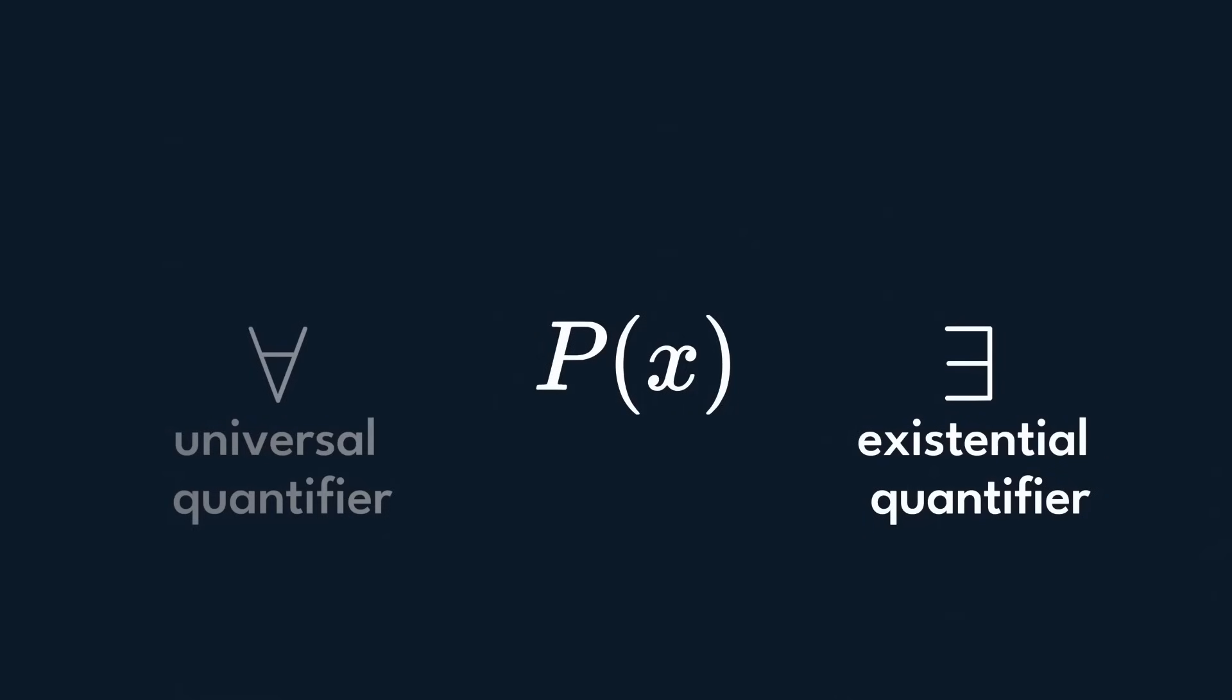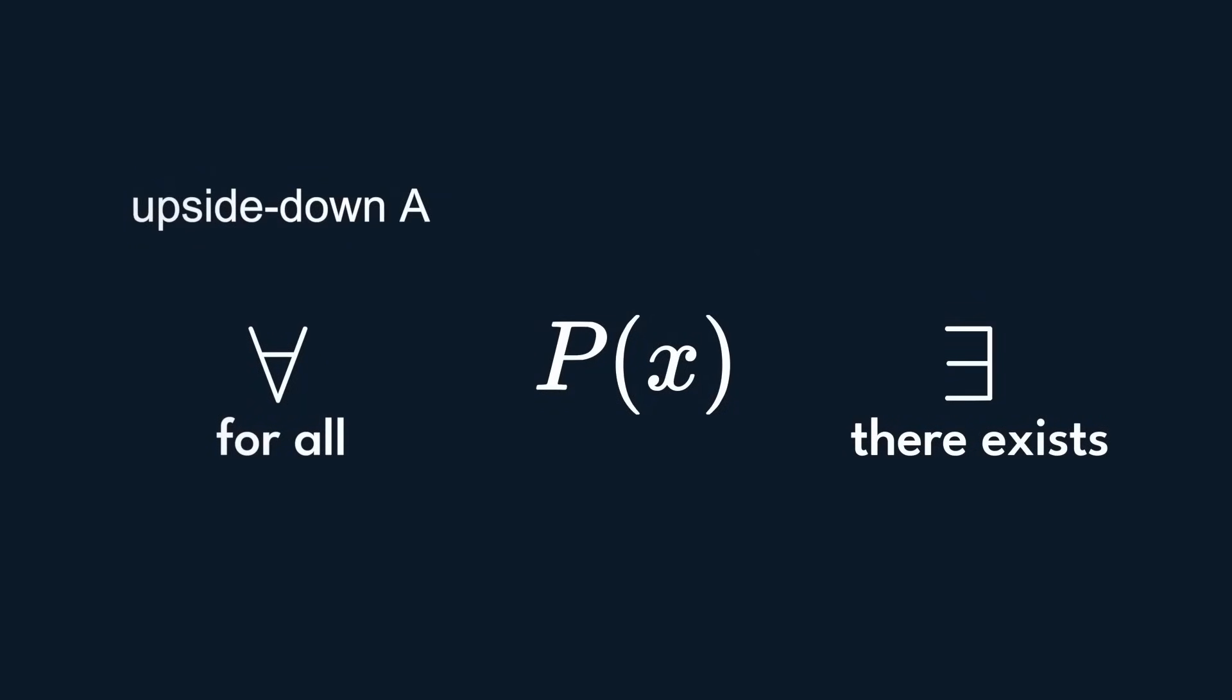But what if you have statements with a variable x, and want to prove that it holds for all values of x, or some value of x? Here come some funny looking alphabets to the rescue! This on the left is the universal quantifier, and on the right is the existential quantifier. In plain English, this means for all x, and this means there exists an x. I'd like to remember this universal one as the upside down A, A for all, and this mirrored E for there exists.